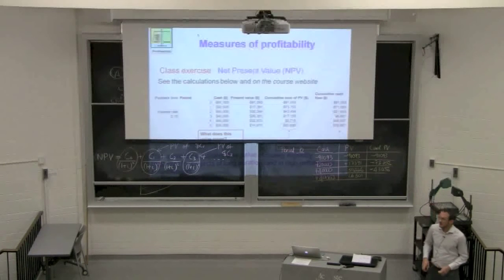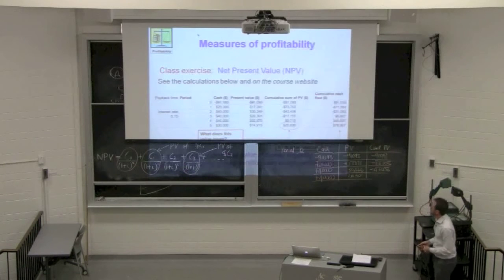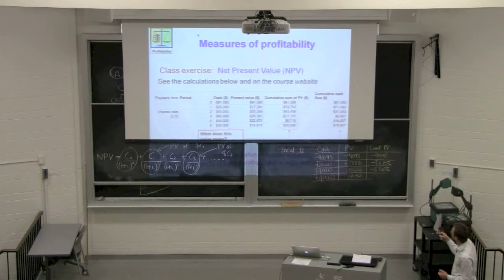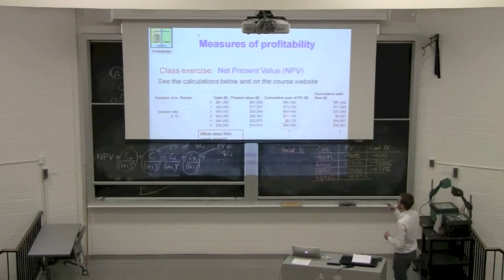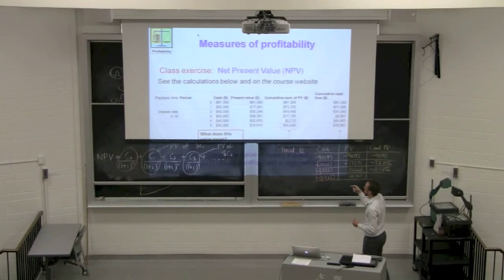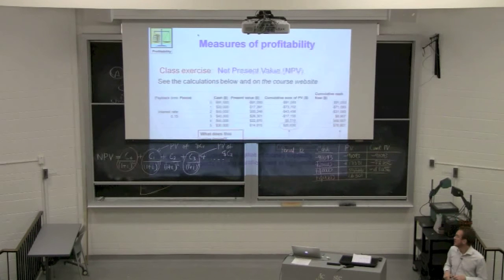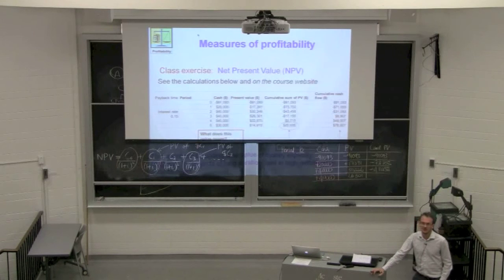Looking at the slide: we have this running accumulation of discounted cash flows — −$91,000, −$73,000, −$43,000, −$17,000 — then we become positive at $5,000. In our final year owning that stove in the restaurant, we have an NPV of $20,600.